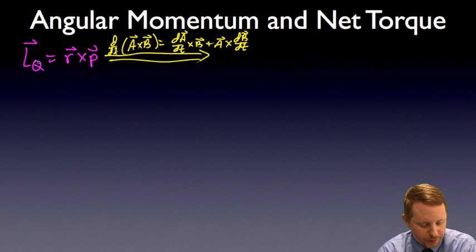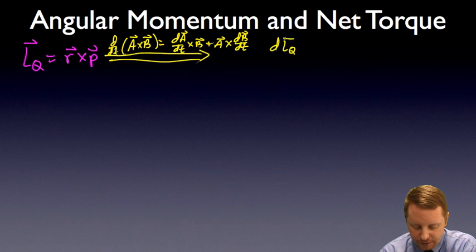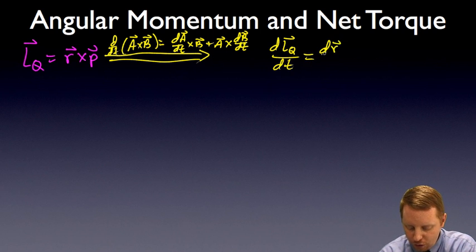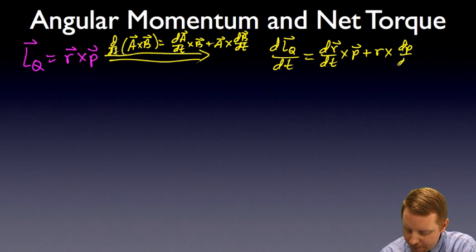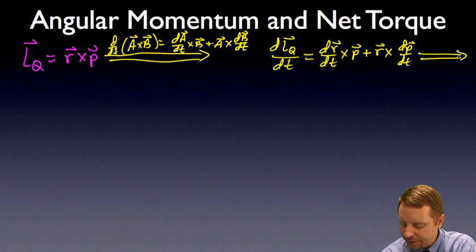So the left-hand side is pretty straightforward. The derivative of angular momentum with respect to t. And the right-hand side becomes the derivative of r with respect to t crossed with momentum p, plus r crossed with the derivative of momentum with respect to t. Looking at this a little further, this derivative of r with respect to t, derivative of position with respect to time, we call that velocity. So dr/dt is our velocity vector. And the derivative of momentum with respect to time, the rate of change of momentum with respect to time gives you a force.